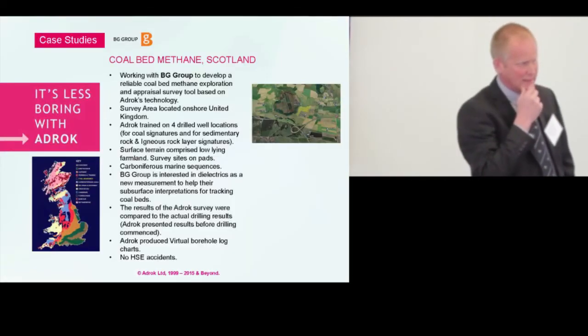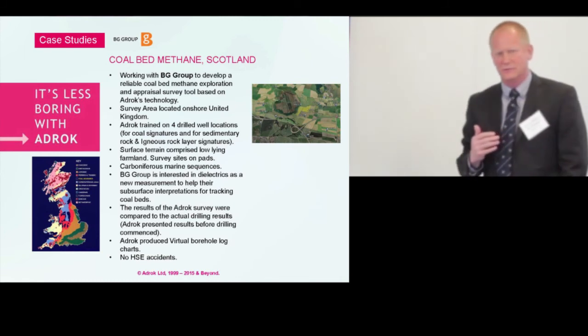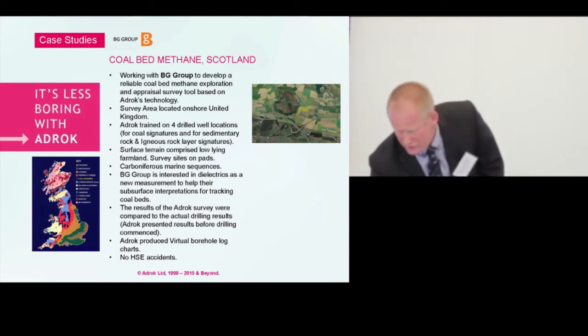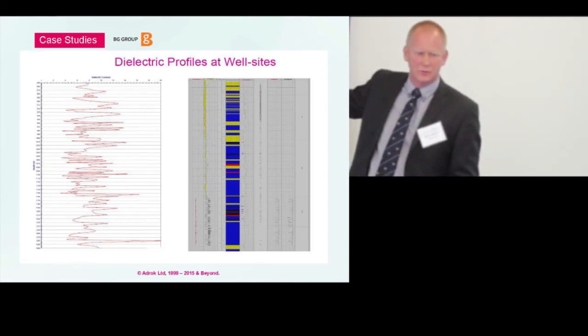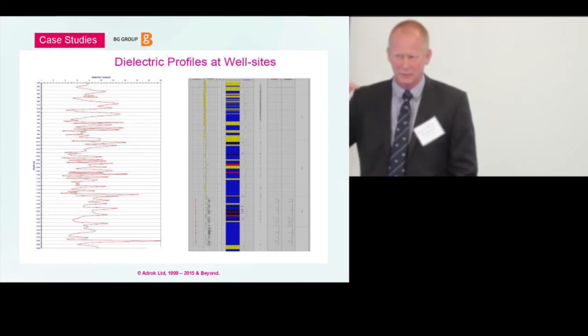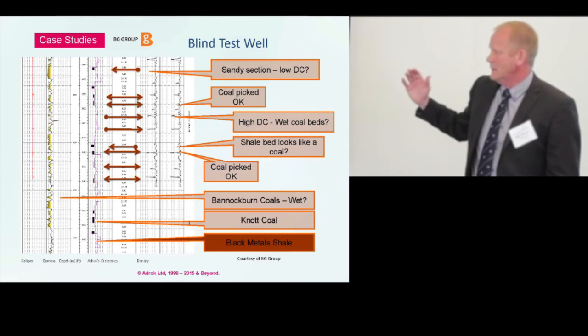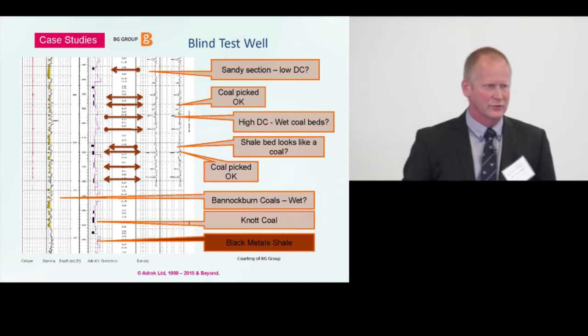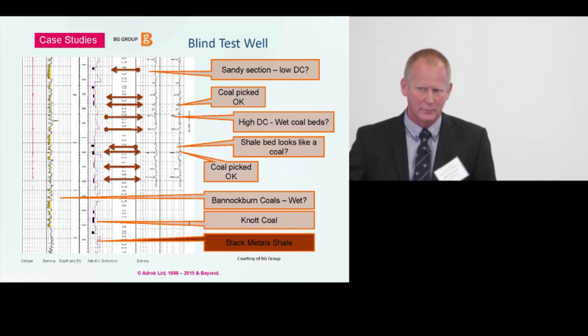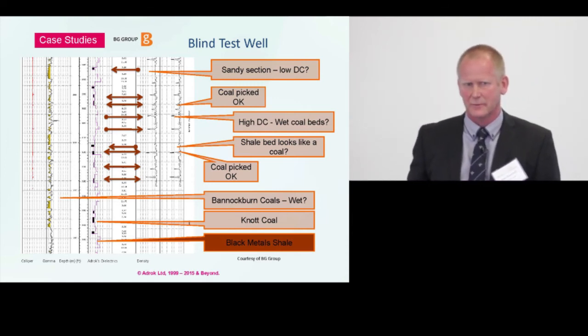Another job that's been ongoing has been looking at coal bed methane. BG Group, this is ongoing project with us for about five years actually. They were interested in early days to see if we could see difference between wet shale and wet coal. And other technologies can't. More wiggly lines that correspond to stratigraphy chart we can produce. This is one output we can push out that gives you stratigraphy as we go down. BG Group did some blind tests on us, and these were their conclusions.